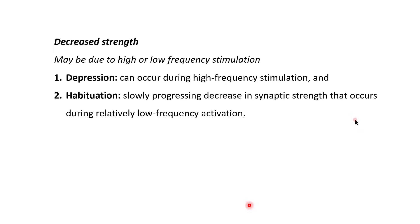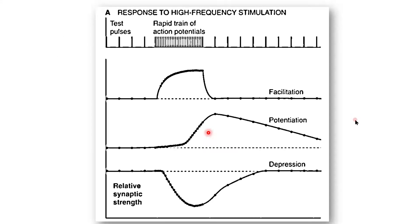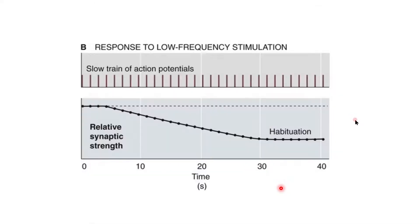Examples of decreased strength of the synapse are depression and habituation. These may be due to high or low frequency stimulation. Depression can occur during high-frequency stimulation, and habituation is a slowly progressing decrease in synaptic strength that occurs during relatively low-frequency stimulation. Due to a rapid train of action potentials, facilitation, potentiation, and depression can happen, whereas with a slow train of action potentials, habituation can happen. All these are examples of short-term changes in synaptic strength.